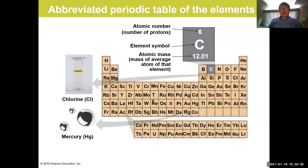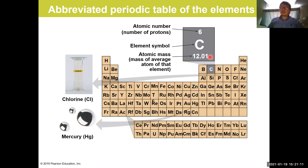If we look at all of the naturally existing elements in the top portion of the periodic table, we'll see a list of many different elements. Each element in the periodic table has some information we can take advantage of — aspects such as the atomic number, the element symbol, and the average mass. For example, looking at carbon: the element symbol is C, and the atomic number for carbon is 6.